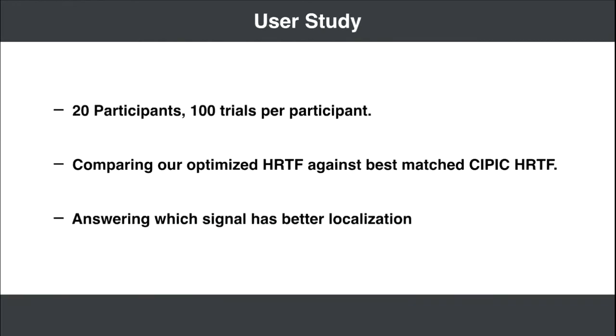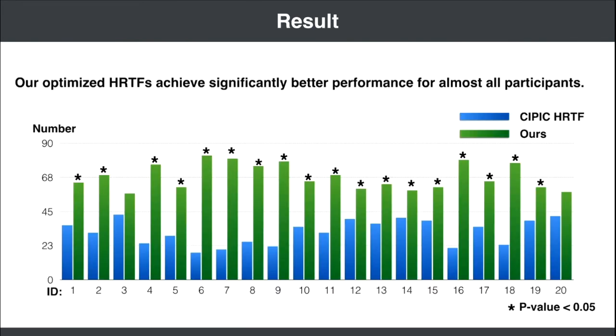We employed 20 participants and optimized HRTFs for them using our system. After each calibration, we conducted a blind listening test to compare the optimized HRTF and the best CIPIC HRTF for each participant. This is the result. This list shows the number of times the better HRTF was selected by each participant. These results reveal that the optimized HRTFs were significantly better for almost all participants than were the best matched HRTFs in the data set.